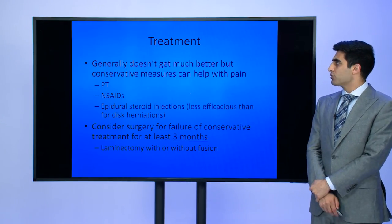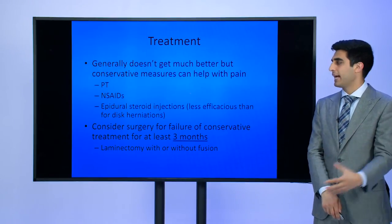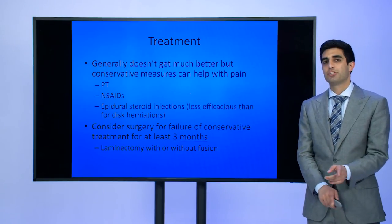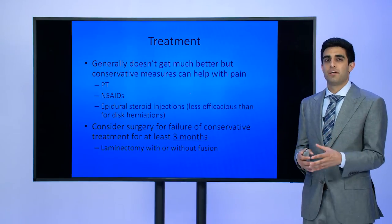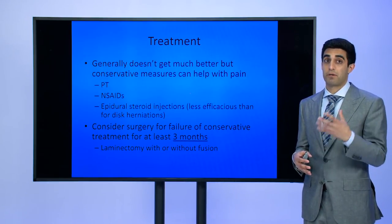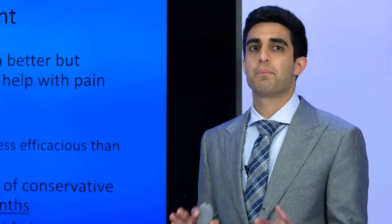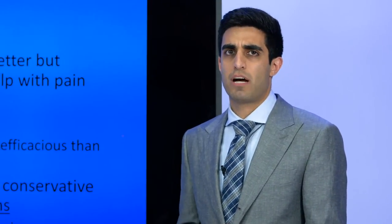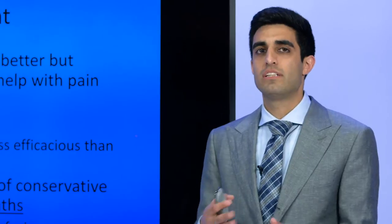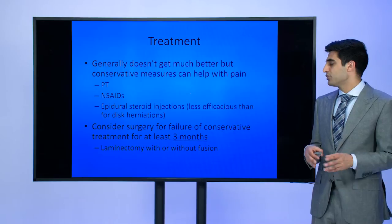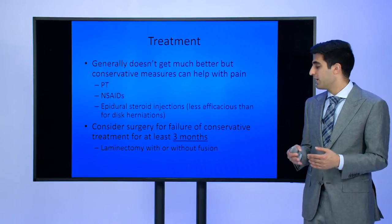On physical exam, you look for lower extremity weakness and sensory changes, but this is largely a historical and image-guided diagnosis. Treatment: unfortunately, spinal stenosis generally doesn't get much better on its own, but conservative measures can help with pain, including physical therapy, anti-inflammatories, and possibly epidural steroid injections — though these are less efficacious for stenosis than for disc herniations, because the compression is chronic with less acute inflammation. Surgery is considered for failure of conservative treatment for at least three months and can involve a laminectomy with or without fusion.